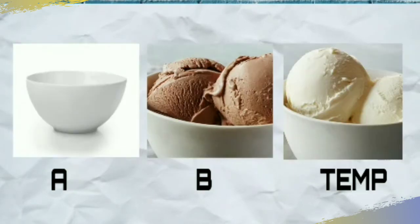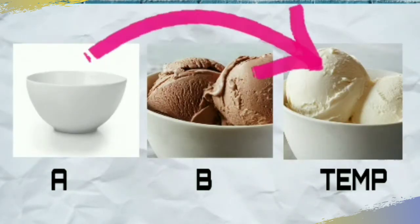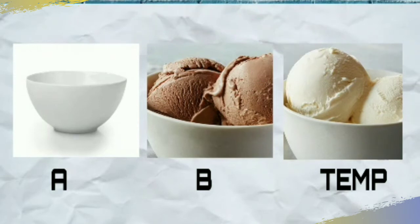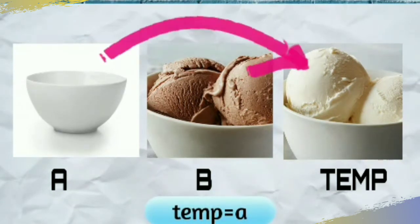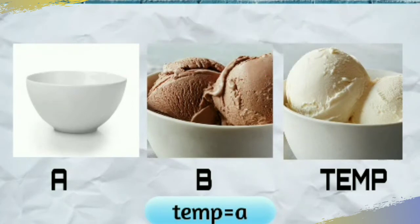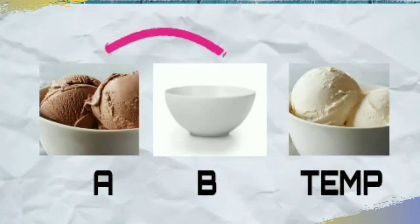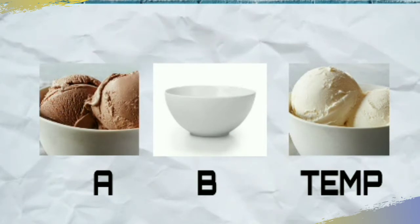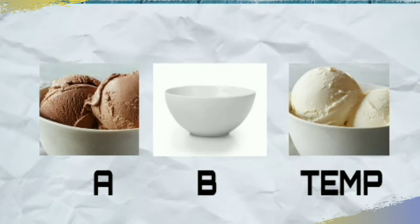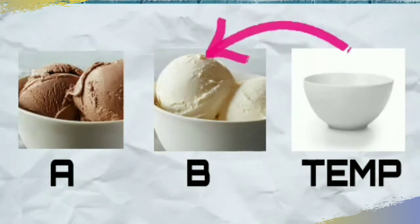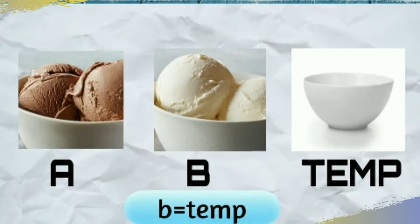We will pour A's contents into temp, then fill A from B, and then fill B from temp. So temp equals A, A equals B, and B equals temp. This is swapping. Now A has what B had and B has what A had.